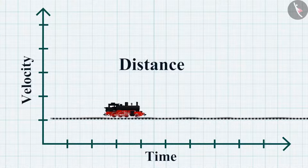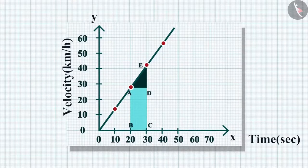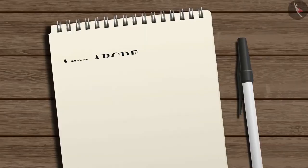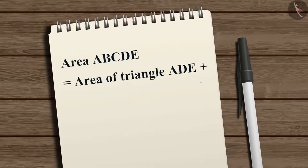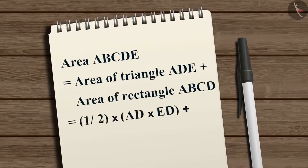We can also calculate the distance covered by the train from the velocity-time graph. The distance traveled in a certain time interval equals the area of ABCDE under the graph. Area ABCDE equals area of triangle ADE plus area of rectangle ABCD, which equals one-half times AD times ED plus AB times BC.